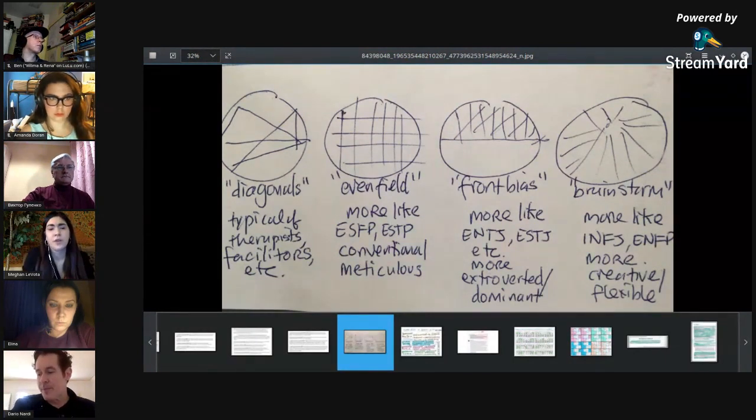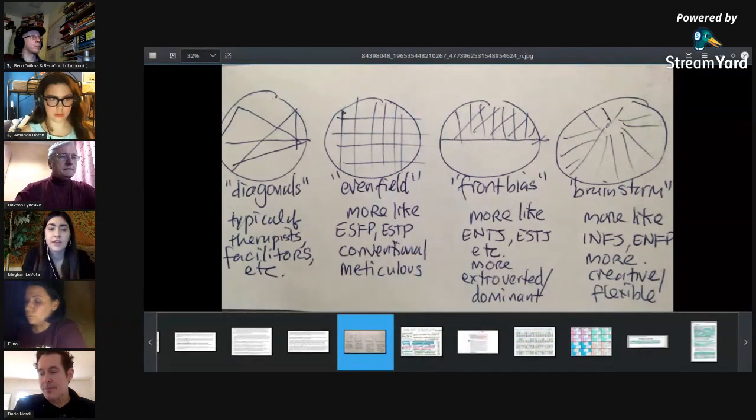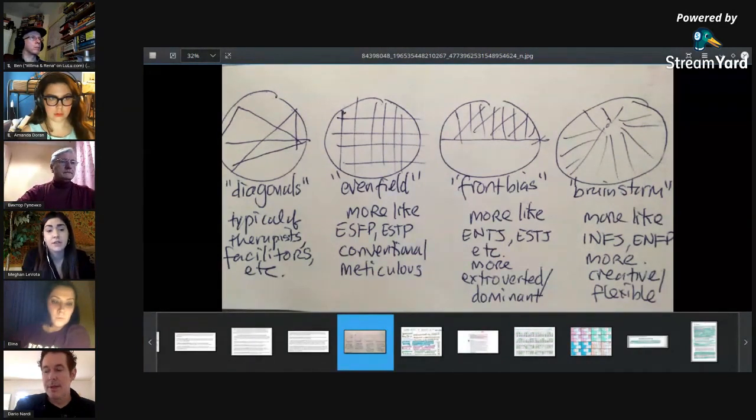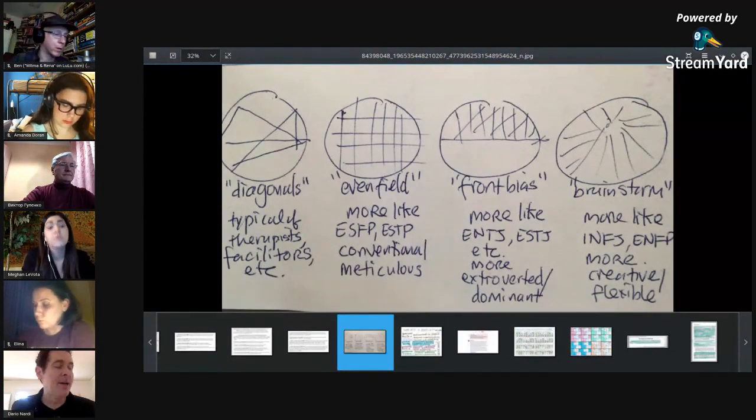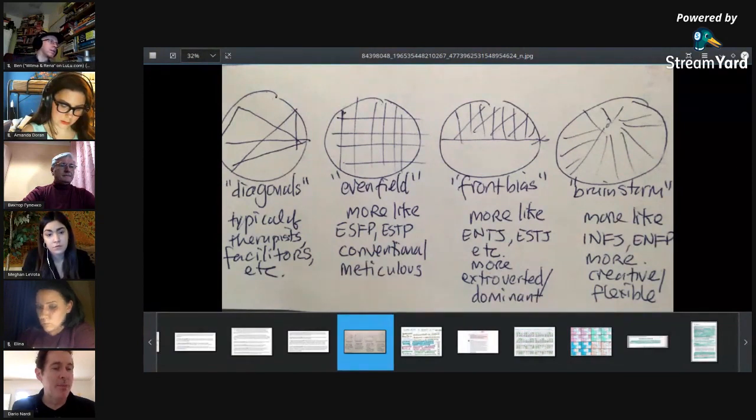So question, just really quick: would you say that the diagonal one is more common for ENFJs then? Yes, but I also have a bias in my data set of a lot of NF women in their 50s in helping professions.